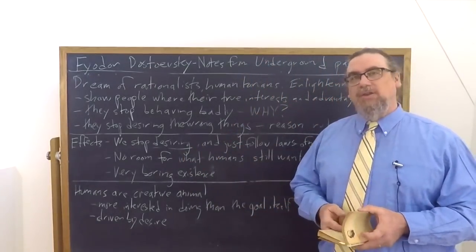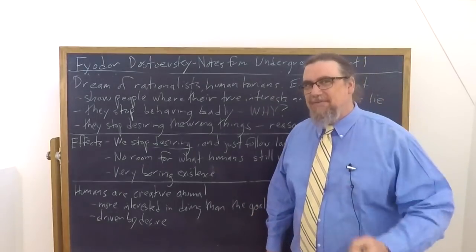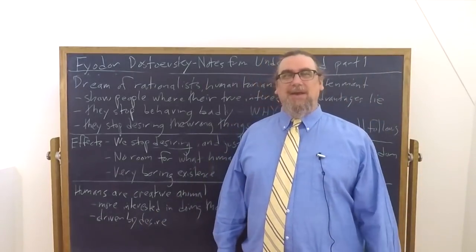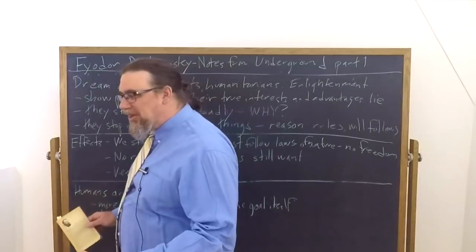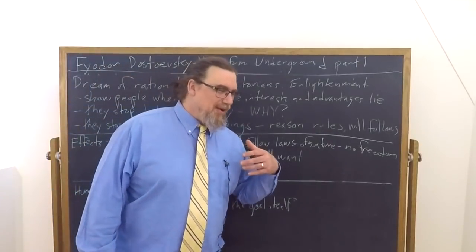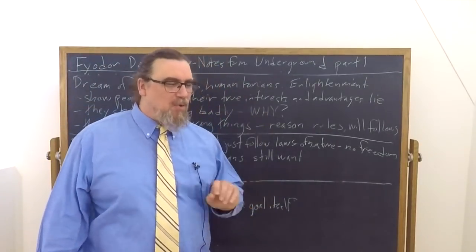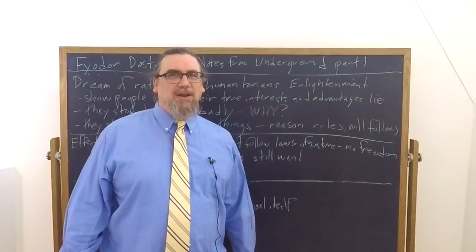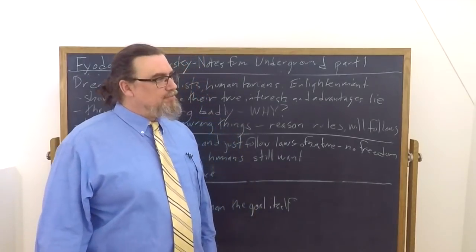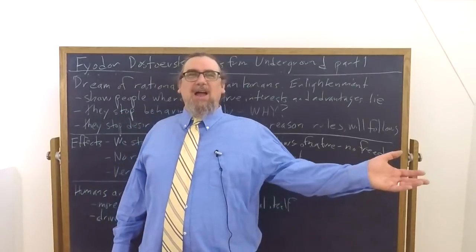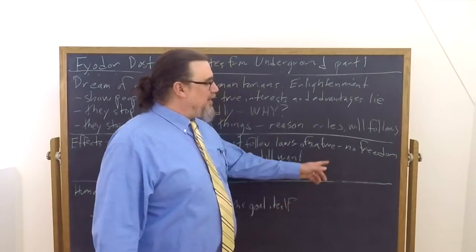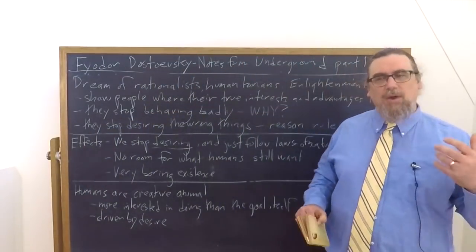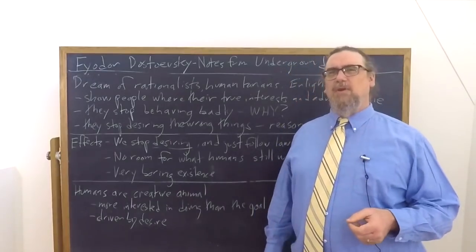So we would stop actually desiring in the way that we feel ourselves to desire. And we would just follow the laws of nature, very complicated laws, what we might call psychological or sociological laws, these generalizations. As we get to know more about the brain and more about human interaction, we could come up with this incredibly complex system that we could perhaps put into a predictive AI. The result is that we'd have no freedom, no freedom in any real sense. We'd keep doing the same things that we do, but we wouldn't be doing them as free beings.